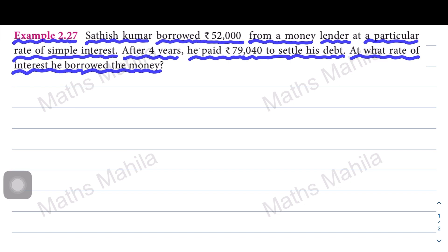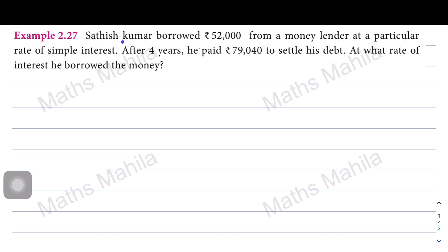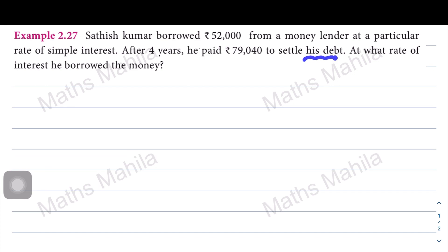Satish Kumar borrowed 52,000 rupees. With simple interest, after 4 years the amount paid was 79,040. We need to find: for what reason — that is, at what rate of interest — did he borrow the money? Now let's look at what is given.